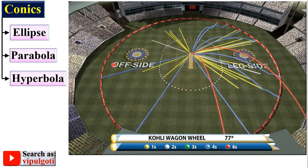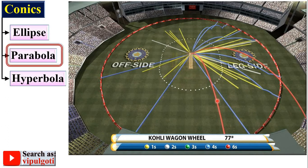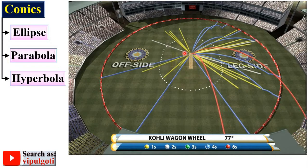Next is the parabola. Here you can see the wagon wheel of cricket player Virat Kohli, and the path of the ball shown in red is the parabola. Very simply, if you throw a ball in the air, it will generate a parabola.